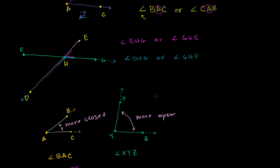Now that we know what an angle is, let's think about how we can measure them. We already hinted at one way in the last video, where we said this angle XYZ seems more open than angle BAC, so maybe the measure of angle XYZ should be larger than angle BAC. And that is exactly the way we think about the measures of angles.